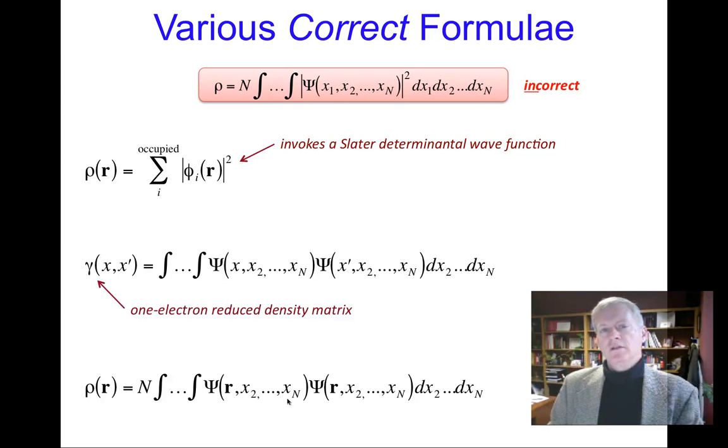It does turn out that there's something called the n-representability problem that has to do with, if I give you what looks like a nice density, smooth, continuous, cusps at nuclei, can you actually reconstruct that density as a Slater determinant? And incidentally, you can also ask about v-representability. Is there a potential that would give that density? So these are sort of deep problems in density functional theory that people worry about. They're beyond the scope of this course, but they are often associated with this quest, if you will, to extract the wave function out of the density, which remains an unsolved problem.